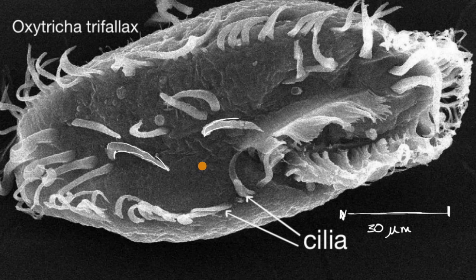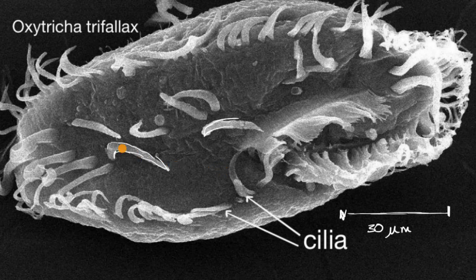What's really interesting about Oxytricha trifallax is how it mates. When it is under stress, it will merge with another Oxytricha trifallax, and instead of producing offspring, they mingle their DNA together. By mating, they change each other's genetic makeup — which is fascinating, and depending on your perspective, highly romantic.